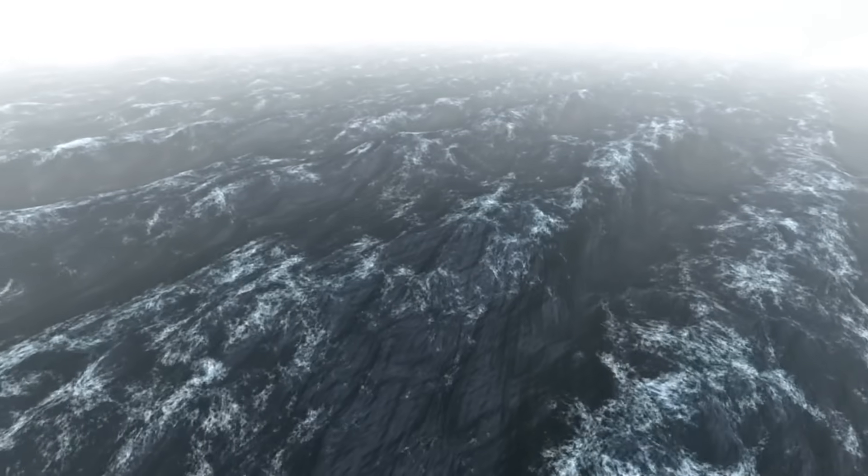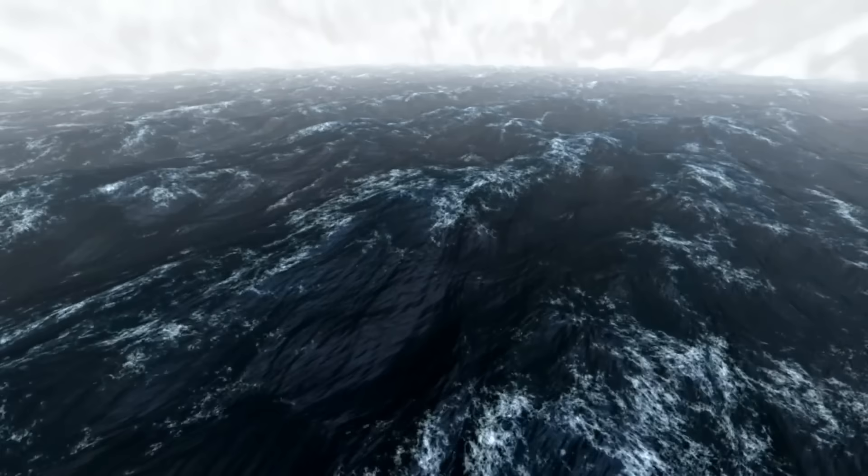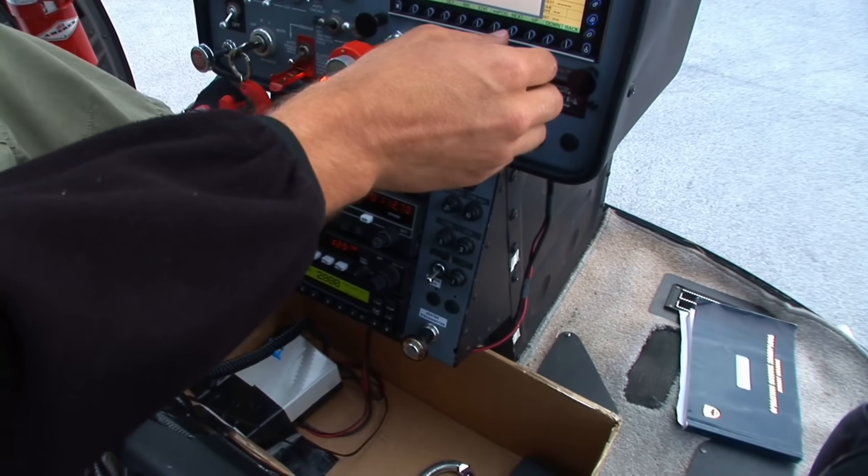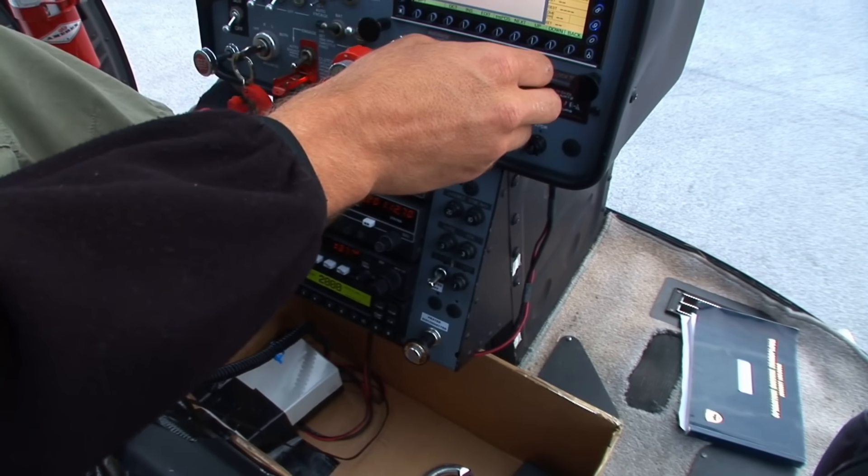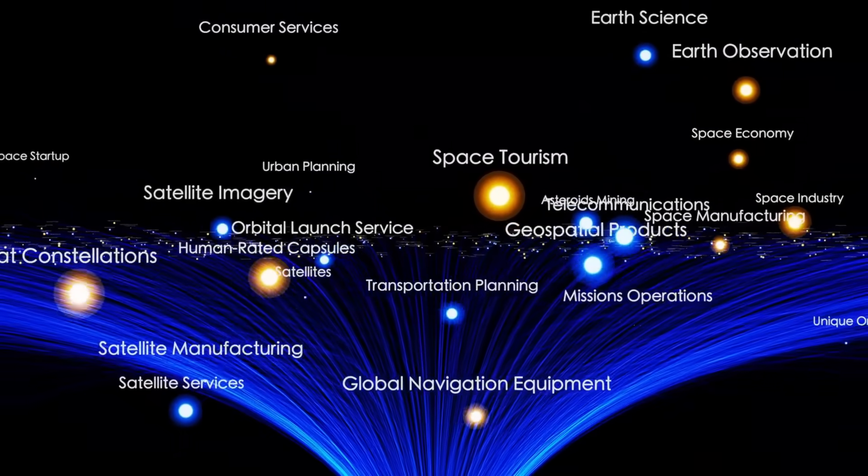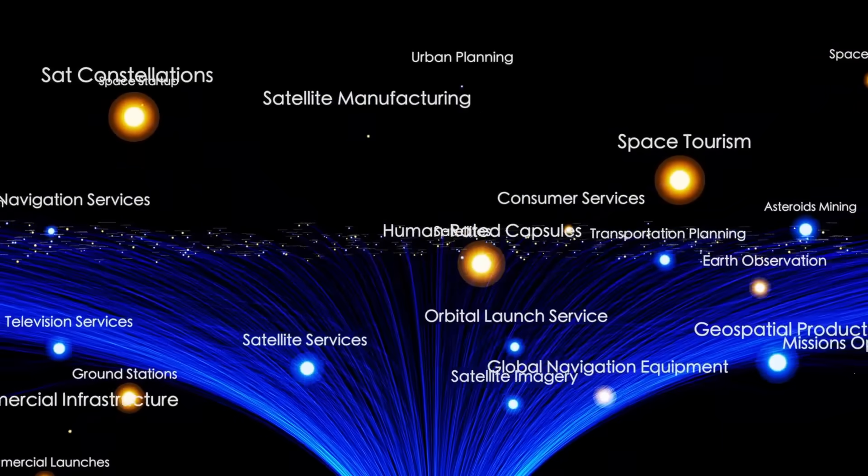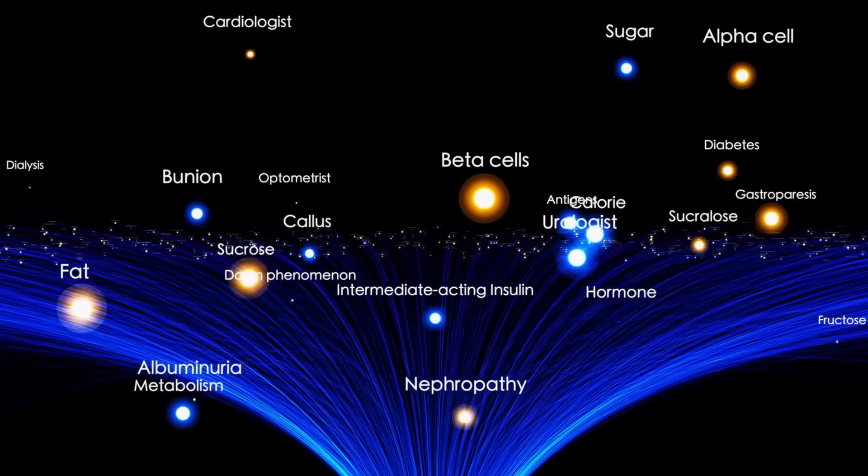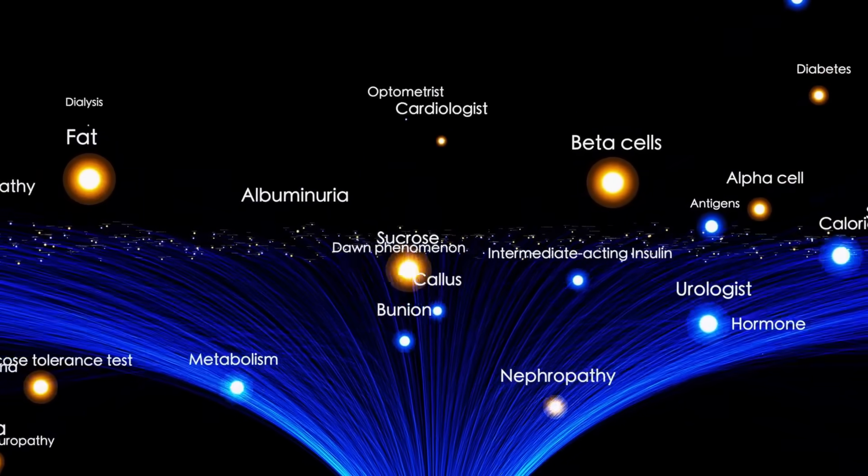After performing flybys of Jupiter and Saturn, Voyager used the gravitational pull of these planets to slingshot itself farther and faster than anything before it. This maneuver, made possible by a rare planetary alignment that occurs only once every 176 years, was dubbed the Grand Tour. Using the gravity of each successive planet, Voyager accelerated outward, escaping the sun's influence and entering the unknown.